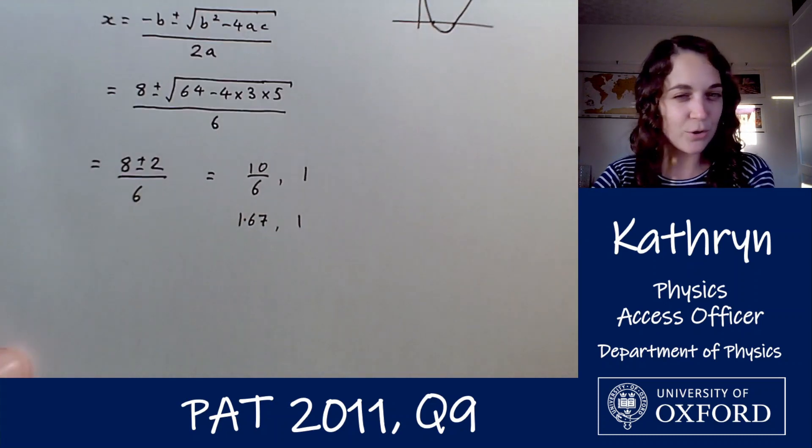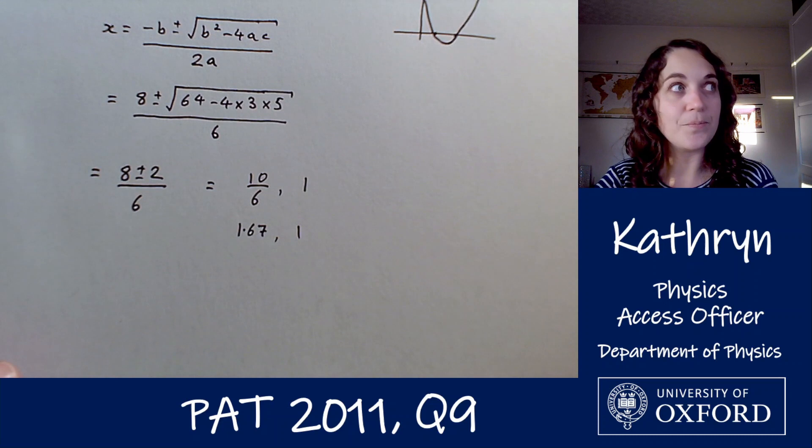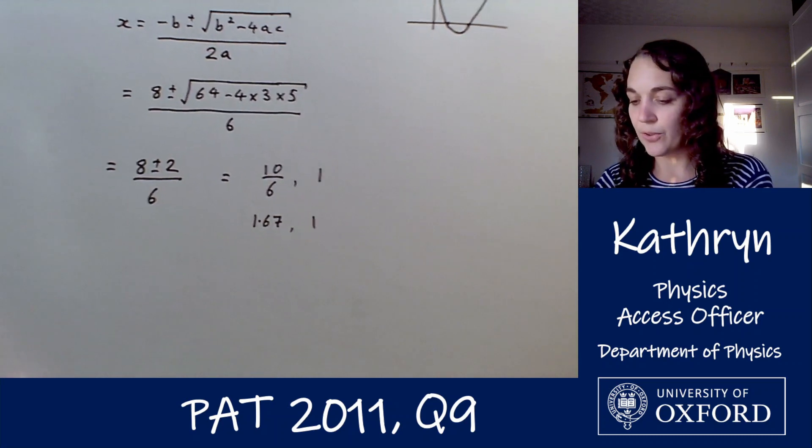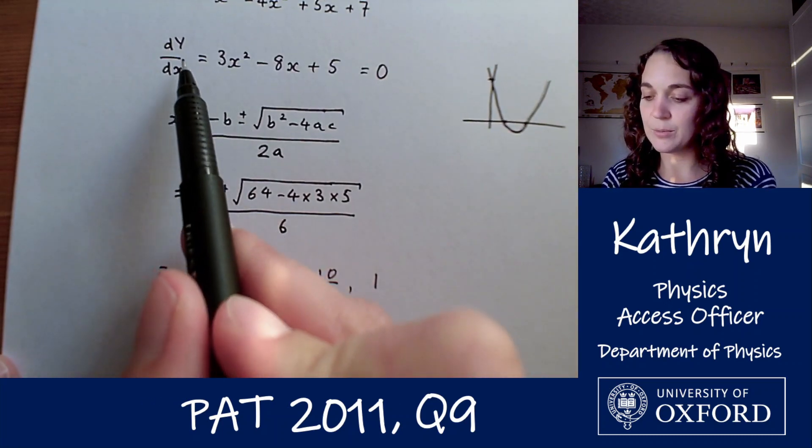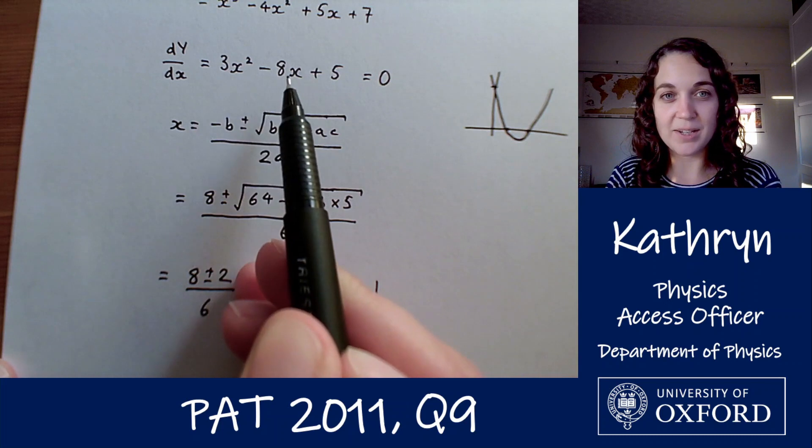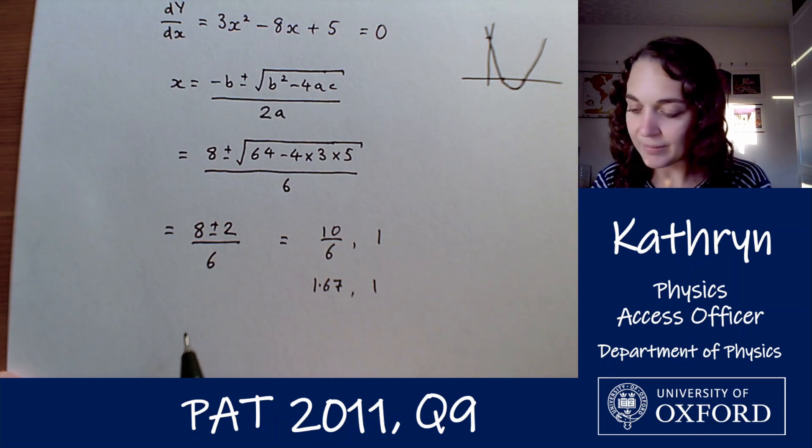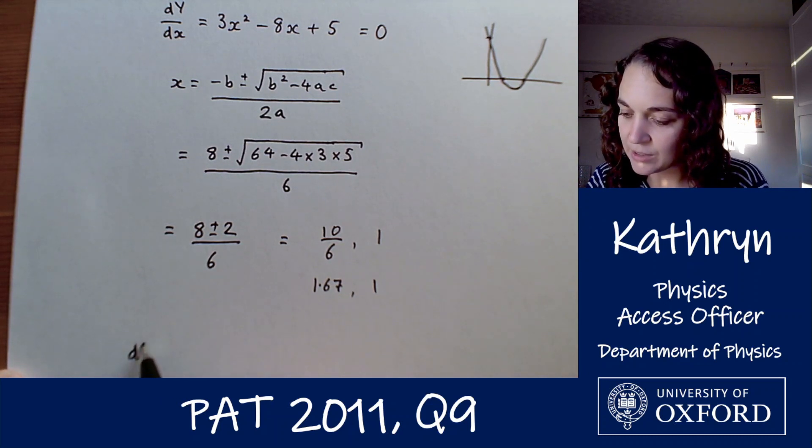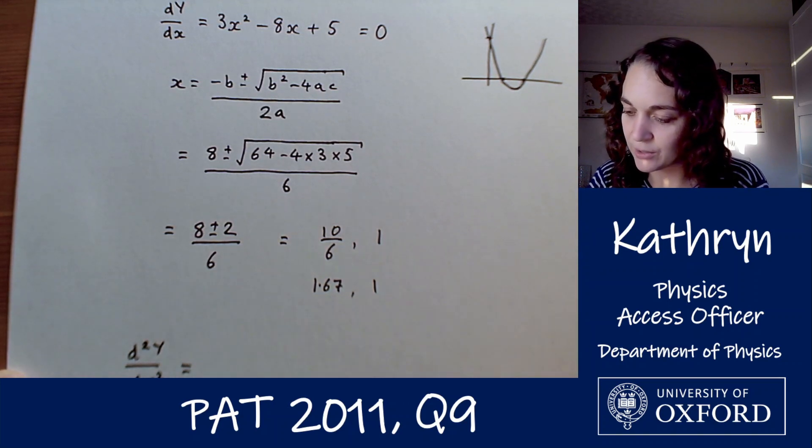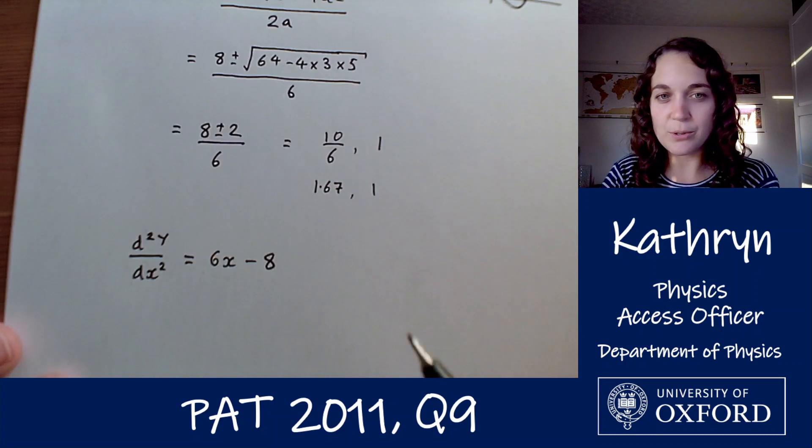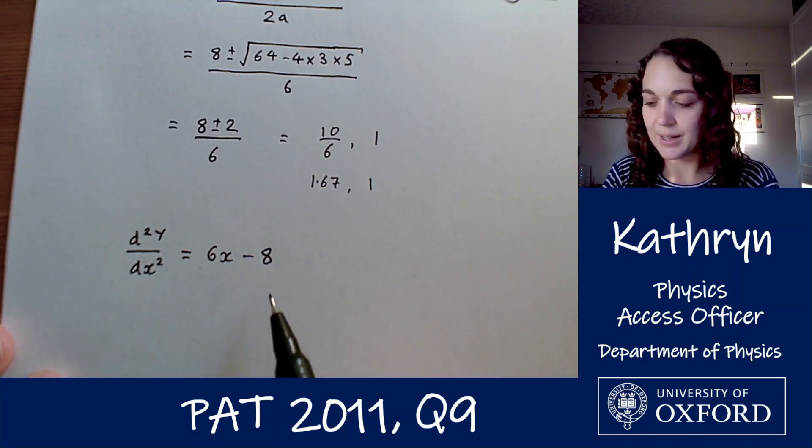But actually maybe the more straightforward way, the more systematic way perhaps, is simply to take the second derivative. So we've got dY by dx is 3x squared minus 8x plus 5. If we differentiate that again then we will have d2Y by dx squared and that is going to be 6x minus 8.